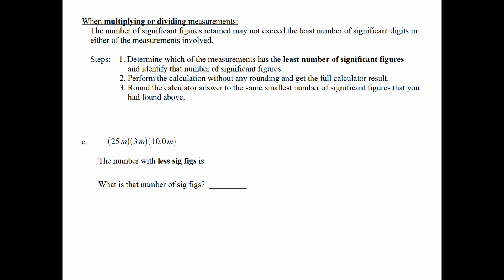Now let's look at the rule for multiplication and division, which is actually very different from the addition subtraction rule. For multiplication and division, the number of significant figures retained may not exceed the least number of significant figures in each of the original measurements involved. First, determine which of the measurements has the least number of significant figures, and then identify how many sig figs does it have.